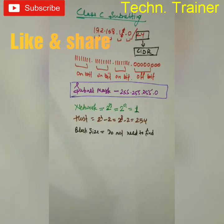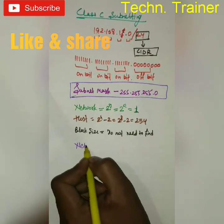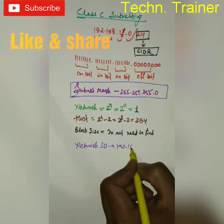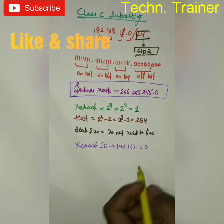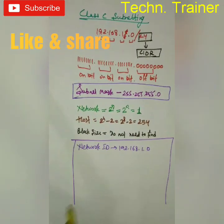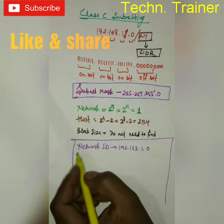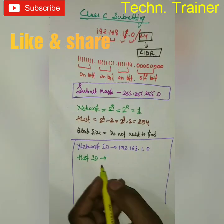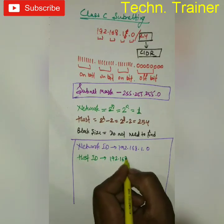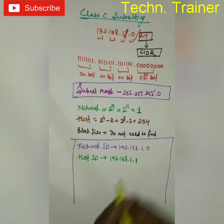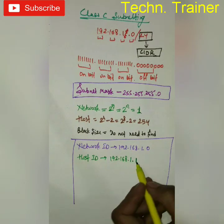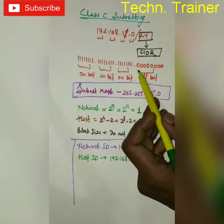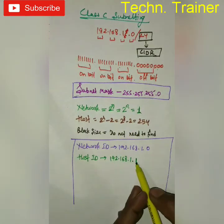So from where does the network start? The Network ID starts from that particular IP. The Host ID means from which IP the systems can take their address, so the IP is going to start from 192.168.1.1. We change in this particular octet because all other bits are on but there are no bits on in this octet, so we are changing here.